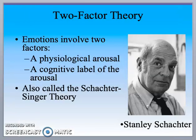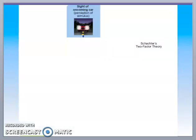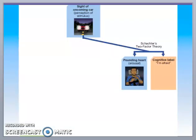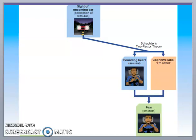The two-factor theory says that physiological arousal and cognitive labeling both occur together. So you have a pounding heart, then you label it by saying 'I'm afraid,' and then fear sets in. The sequence is: pounding heart, then the cognitive label 'I'm afraid,' then fear — unlike the previous theories.